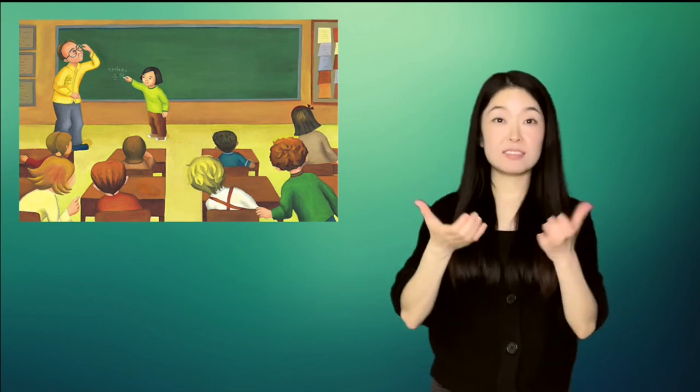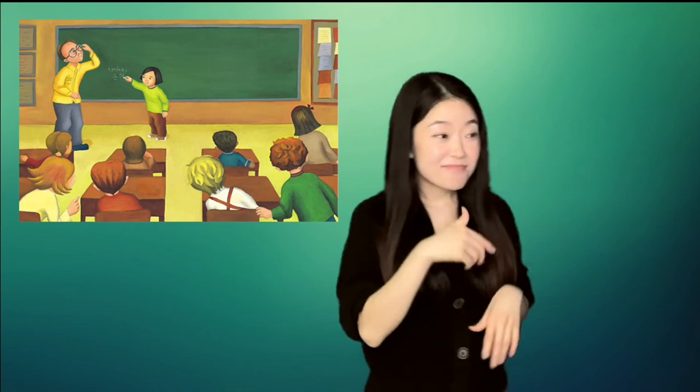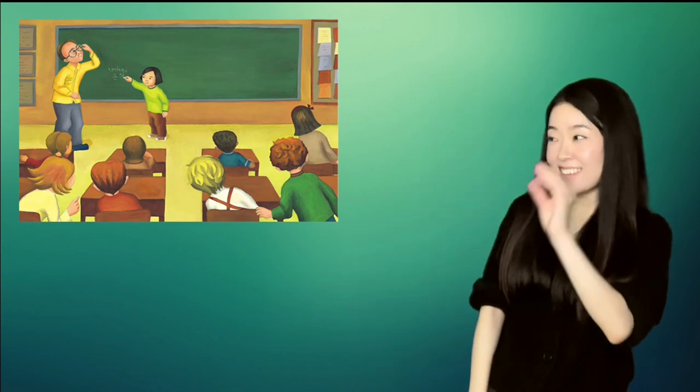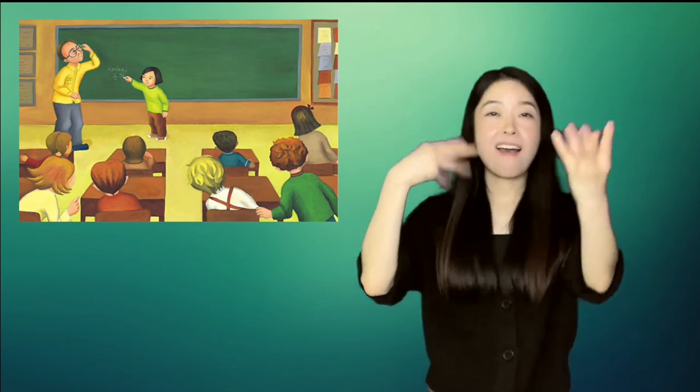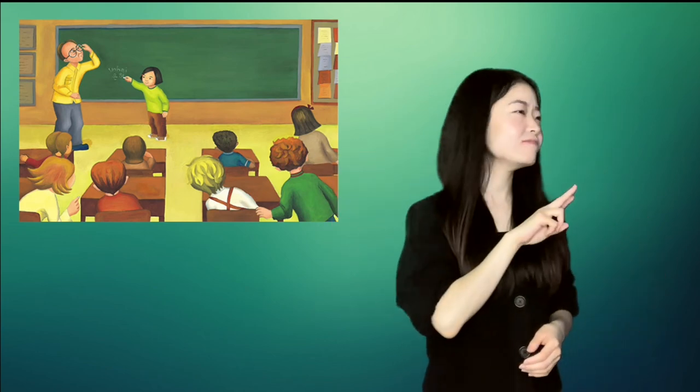When the class was dismissed, Unhei heard her new friends say goodbye. Bye, Unhei. See you tomorrow. Goodbye, Unhei. Unhei said goodbye. And then, she looked around for Joey. But, he was already gone.